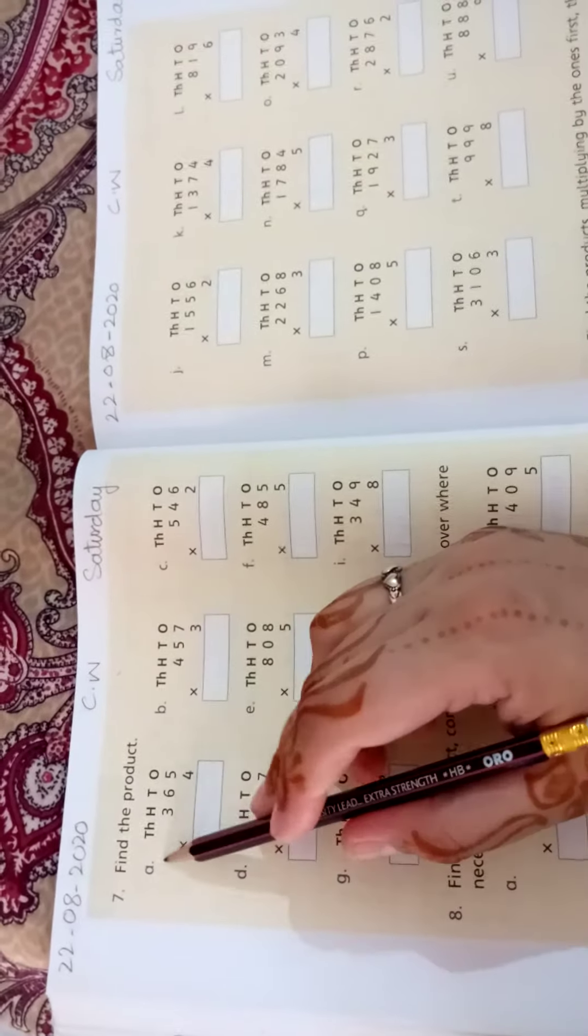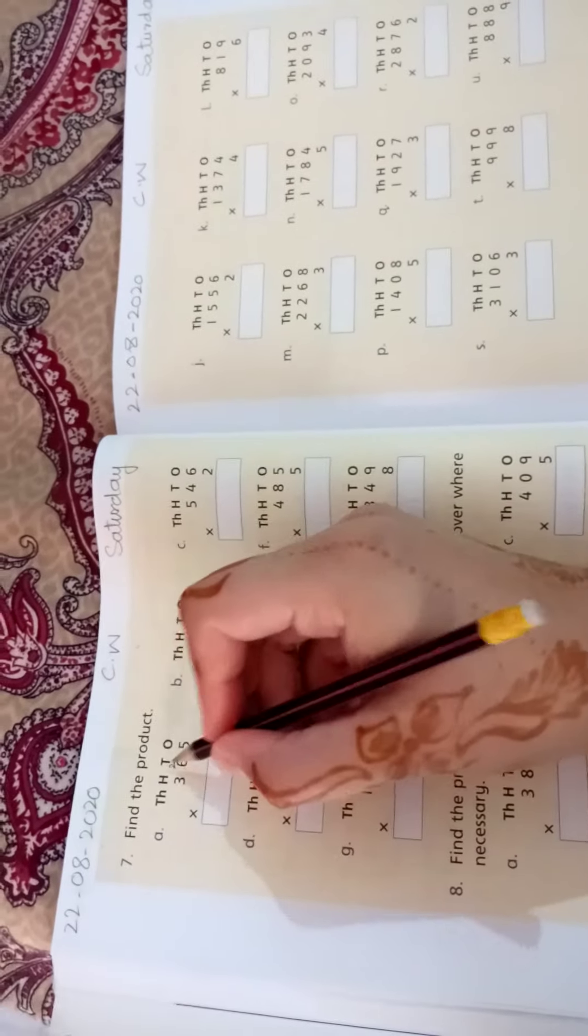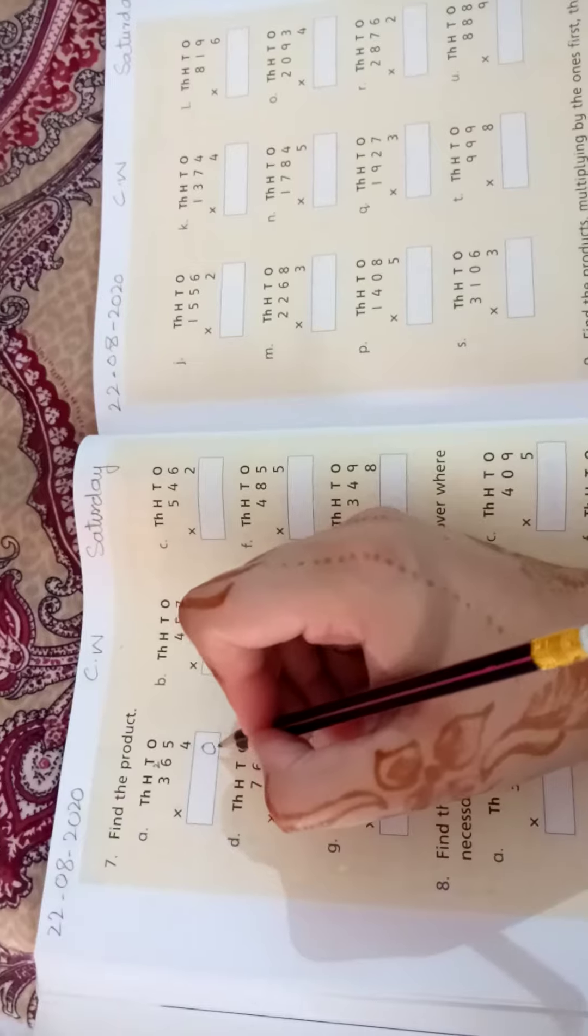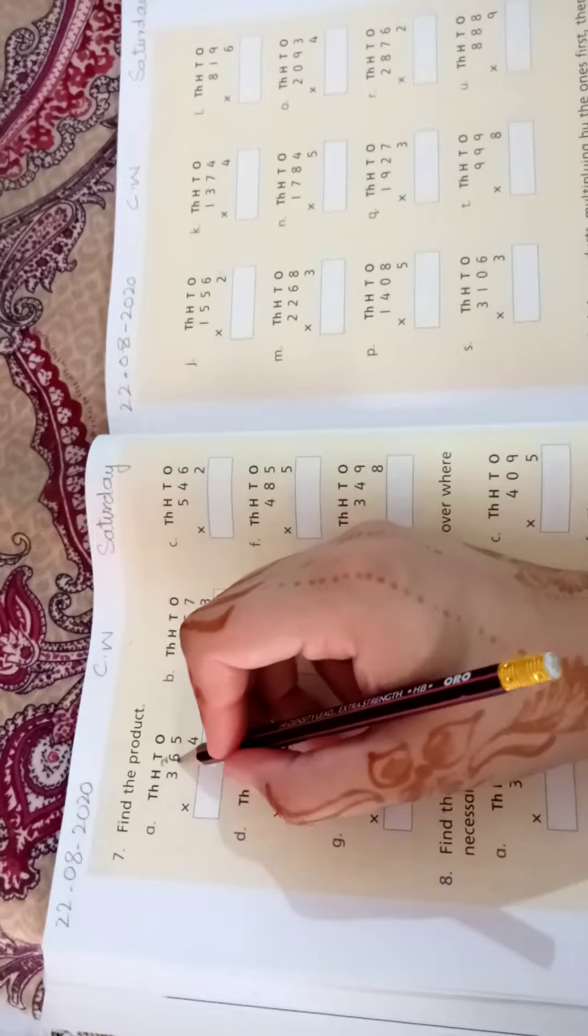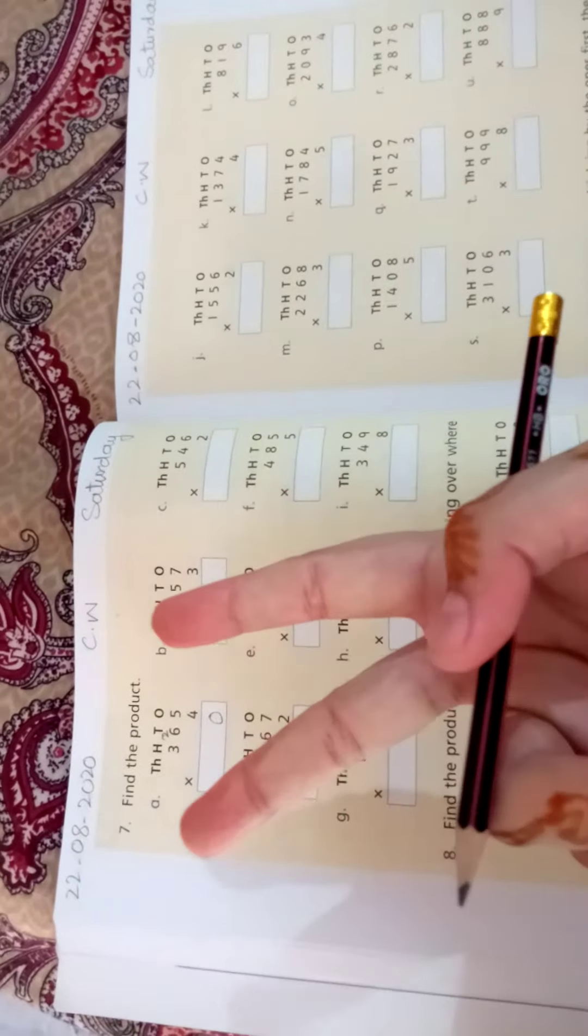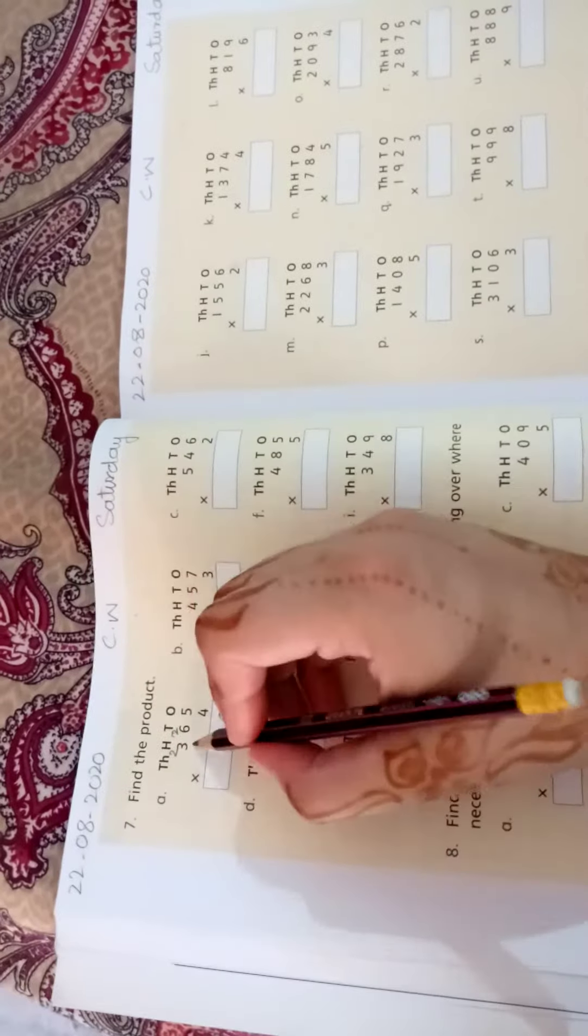The number on the right side goes down, and the left side number carries over. Four times 6 equals 24, add the 2 to get 26. Write 6, carry 2. Four times 3 equals 12, plus 2 equals 14. The answer is 1,460.